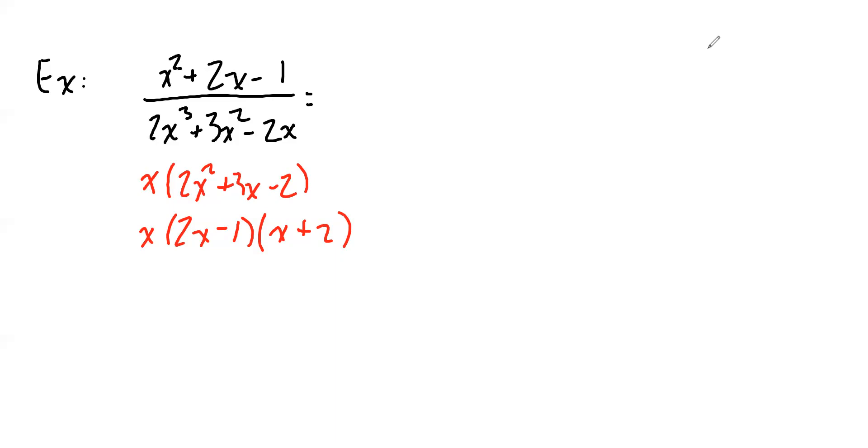So now we have our denominator factored into a product of unique linear factors: X, 2X minus 1, and X plus 2.